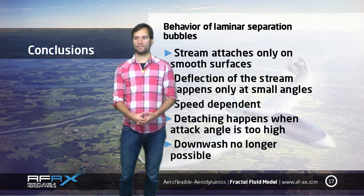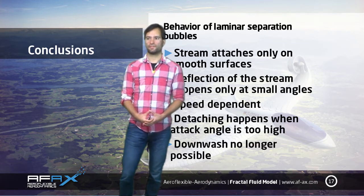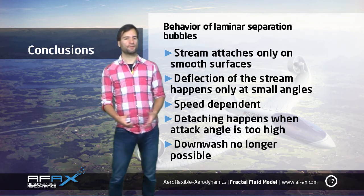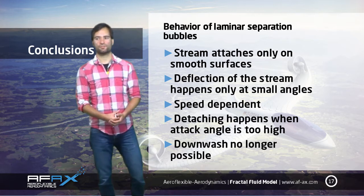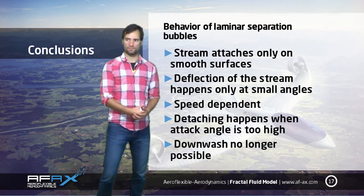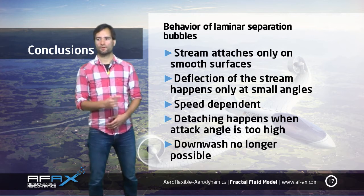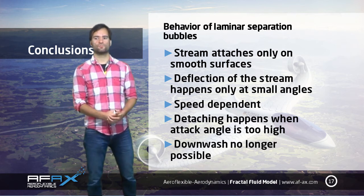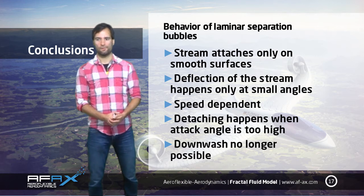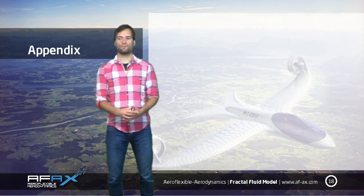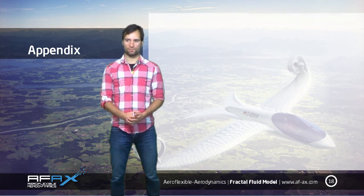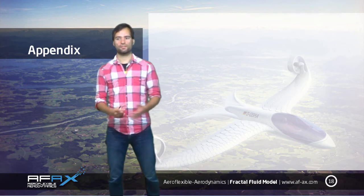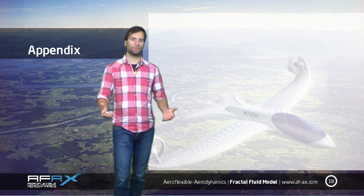Now we have seen that air attaches on smooth surfaces and tends to follow their contour at low angles of attack. If the angle gets steeper, attachment no longer works — instead, it detaches by creating turbulence. One thing to note: this phenomenon is also speed-dependent. The slower we get, the faster flow separation occurs. In the next chapter we will get to the bottom of all those questions, providing a solution for why lift and stall occur. That will lead us to a working lift theory including all known effects.